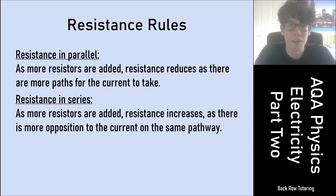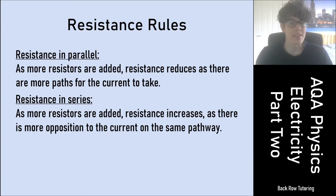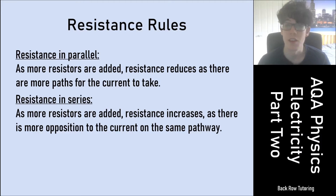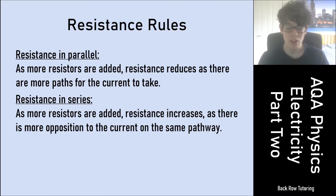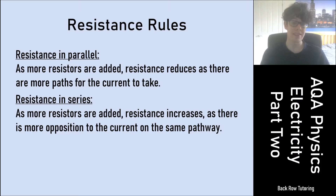There are some rules about resistance that differ depending on whether resistors are connected in parallel or in series. For resistances in parallel, as more resistors are added the resistance reduces, because there are more paths for the current to take. For example, one resistor of five ohms in a circuit — adding another five-ohm resistor in parallel brings the total resistance down.